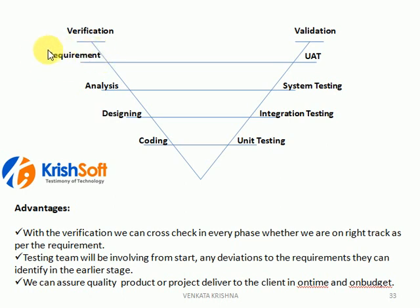Once the requirement phase is completed, we enter into the analysis phase. In the analysis phase, we do a feasibility study, selection of technology and environment, prepare reverse KT documents, do team building, and give updates to the client — how much of the requirements we understood and how much is pending. If any clarifications are there, those clarifications we get from the client.